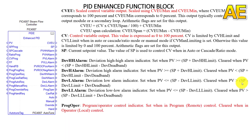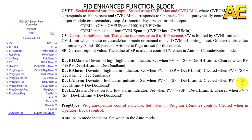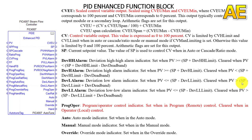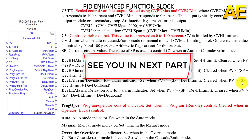The next output is ProgOper — the program or operator control indicator, set when in program or remote control and cleared when in operator or local control. Next is Auto — the auto mode indicator, set when in auto mode. And Manual — set when in manual mode. And Override — the override mode indicator, set when in override mode. And the final output is the cascade or ratio mode indicator, set when in cascade or ratio mode.